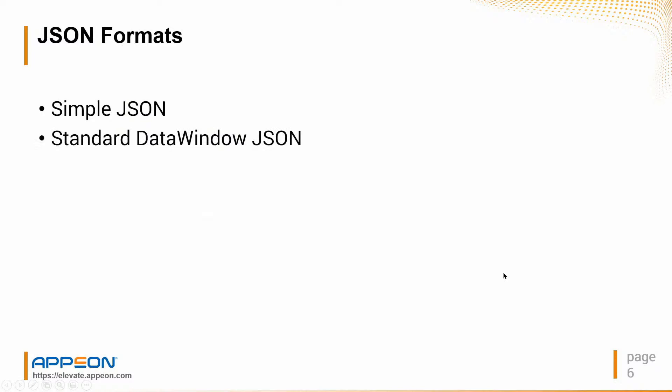Let's talk about the different formats of JSON. There are two formats in particular. One is the type of JSON used by all the different tools out there — what Appian refers to as simple JSON. It's name-value pairs, arrays of that information, structures and arrays of those structures.